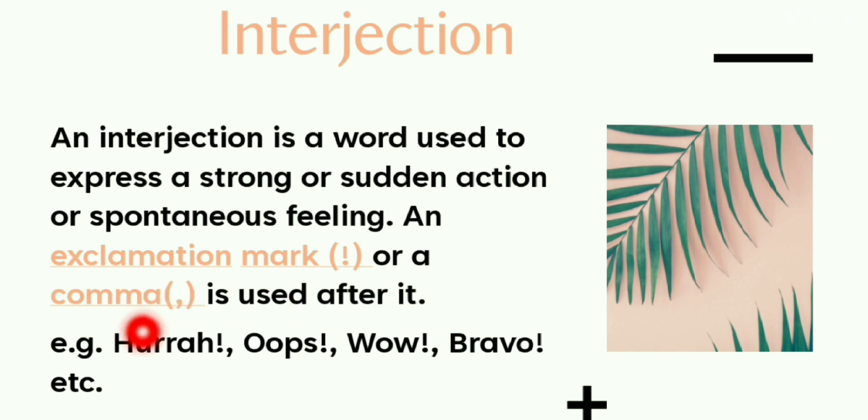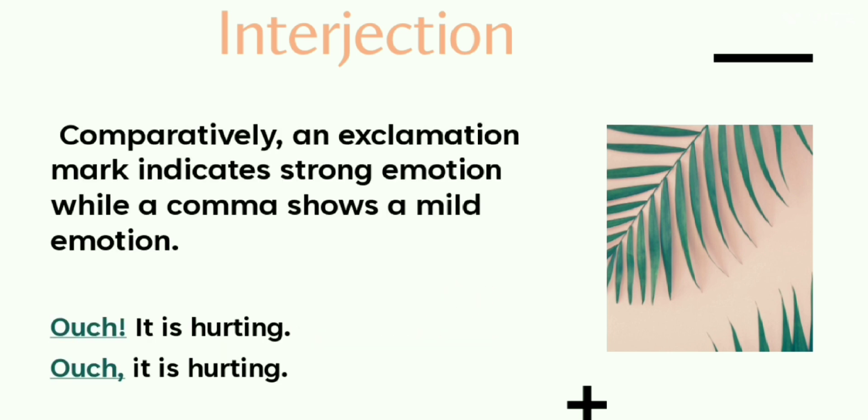Some examples of interjections are hurrah, oops, wow, bravo, etc. Comparatively, an exclamation mark indicates strong emotion while a comma shows a mild emotion. For example: Ouch! It is hurting. Ouch, it is hurting. You can find the difference as well.